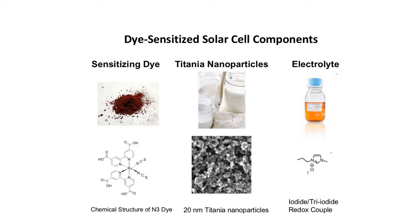Here is the list of materials required for making a dye-synthesized solar cell in a laboratory. These are sensitizing dye, titania nanoparticles, and electrolyte. Below are the pictures of the chemical structures and the morphology of titania nanoparticles.